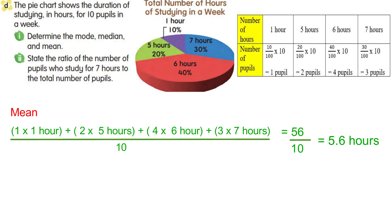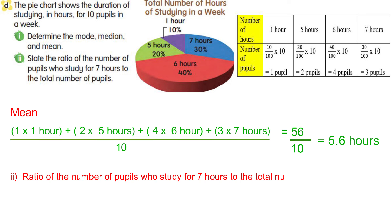State the ratio of the number of pupils who study for 7 hours to the total number of pupils. The pupils who study for 7 hours is 3, and the total number of pupils is 10. So the ratio of pupils who study for 7 hours to the total number of pupils is 3 to 10.